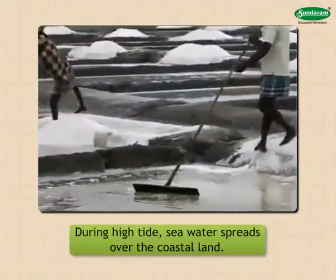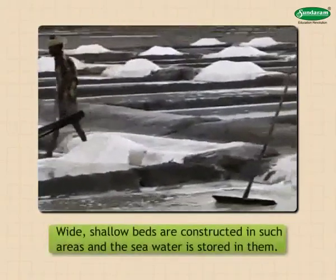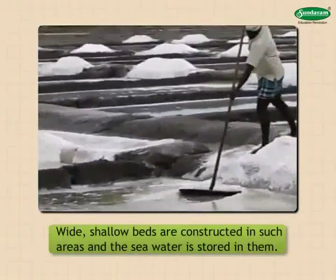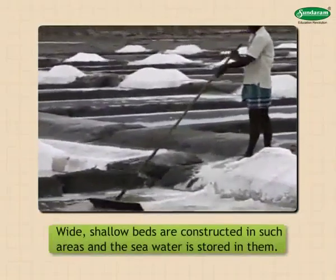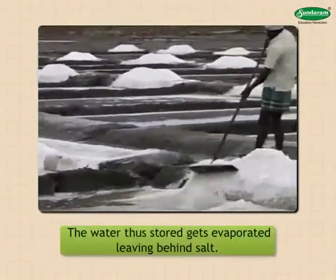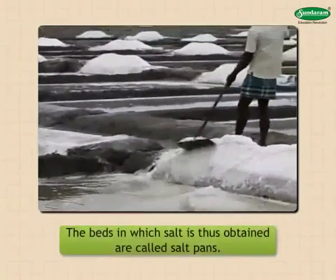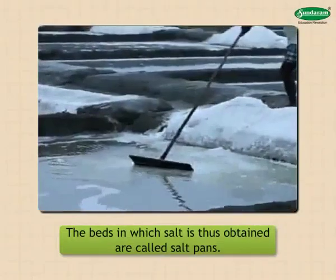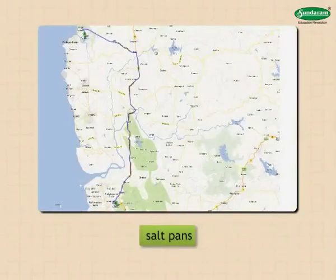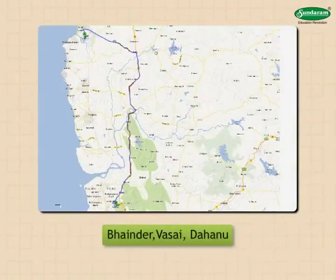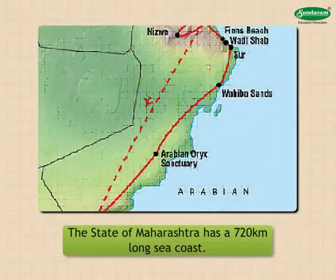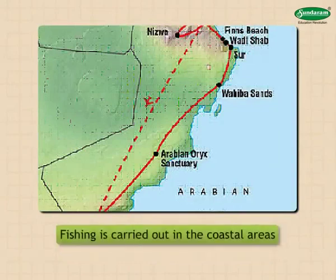During high tide, sea water spreads over the coastal land. Wide, shallow beds are constructed in such areas and sea water is stored in them. The water thus stored gets evaporated, leaving behind salt. The beds in which salt is thus obtained are called salt pans. In our state, salt pans are seen at places like Bhayandar, Vasai, Dhanu, etc. The state of Maharashtra has a 720 km long sea coast.